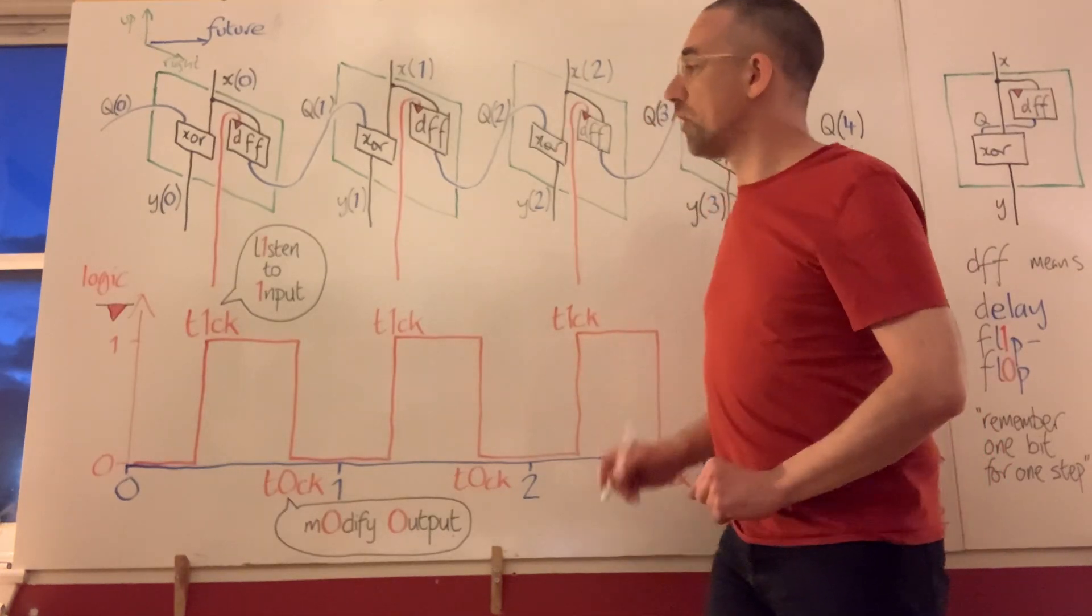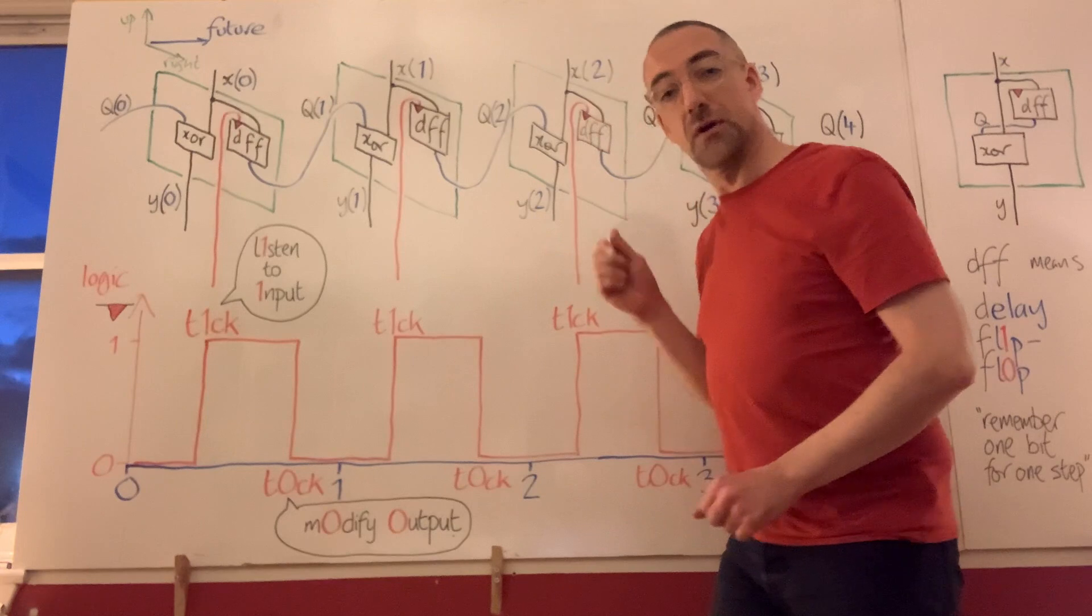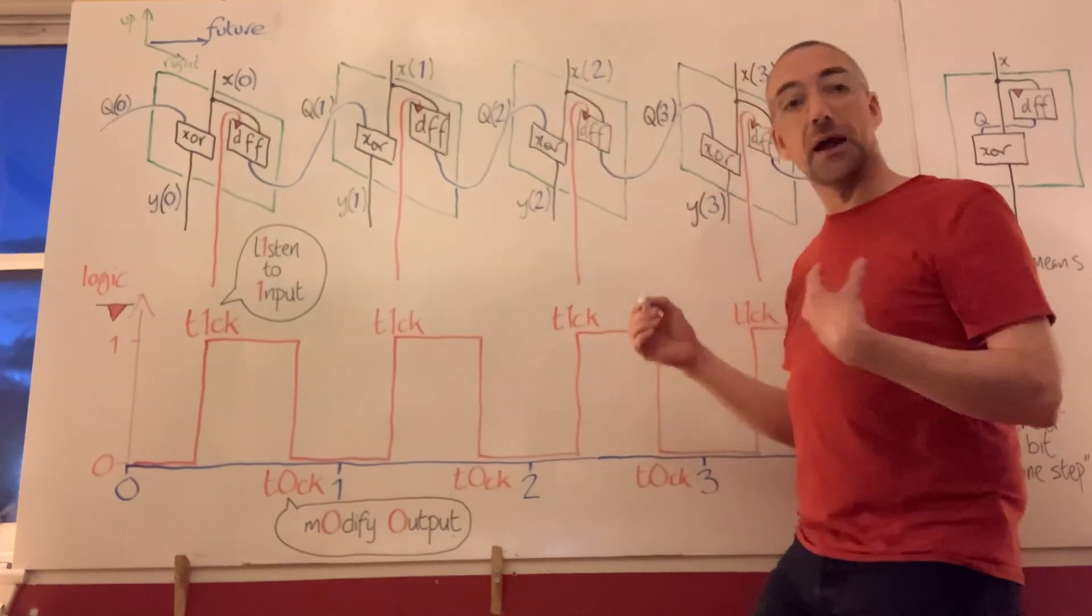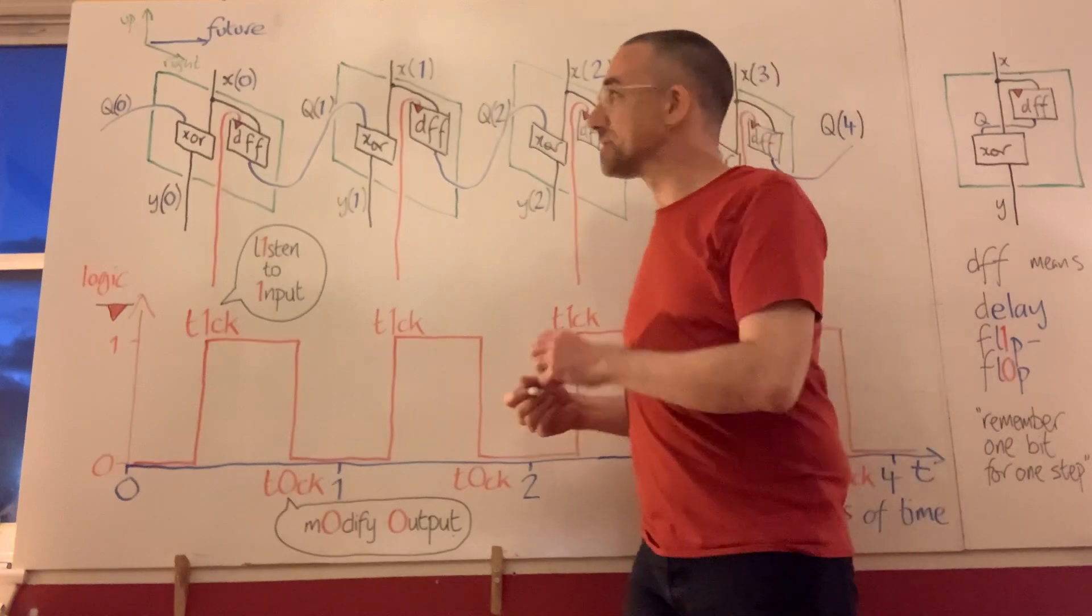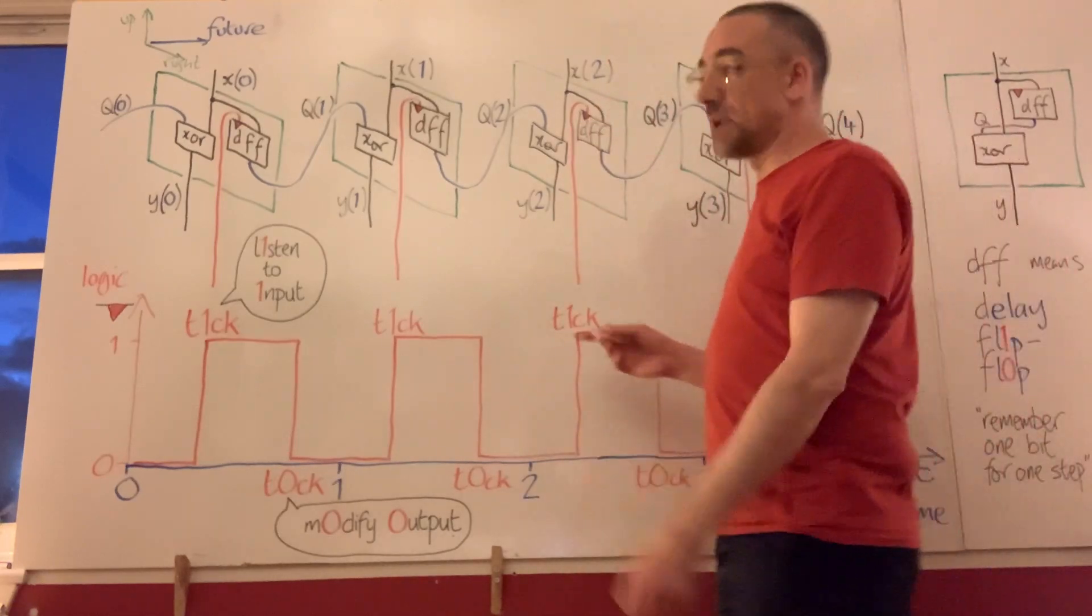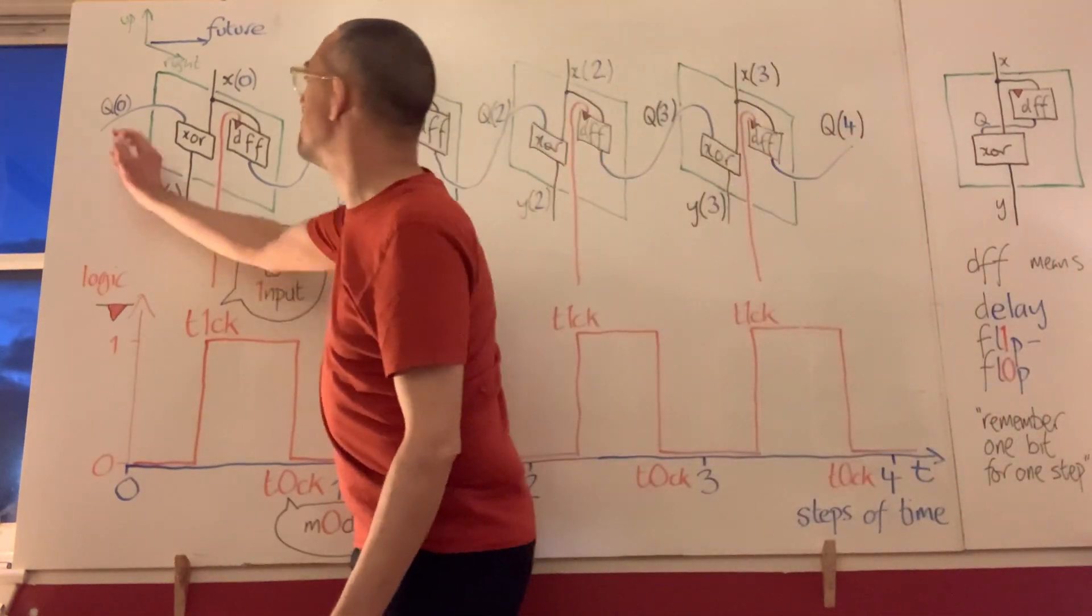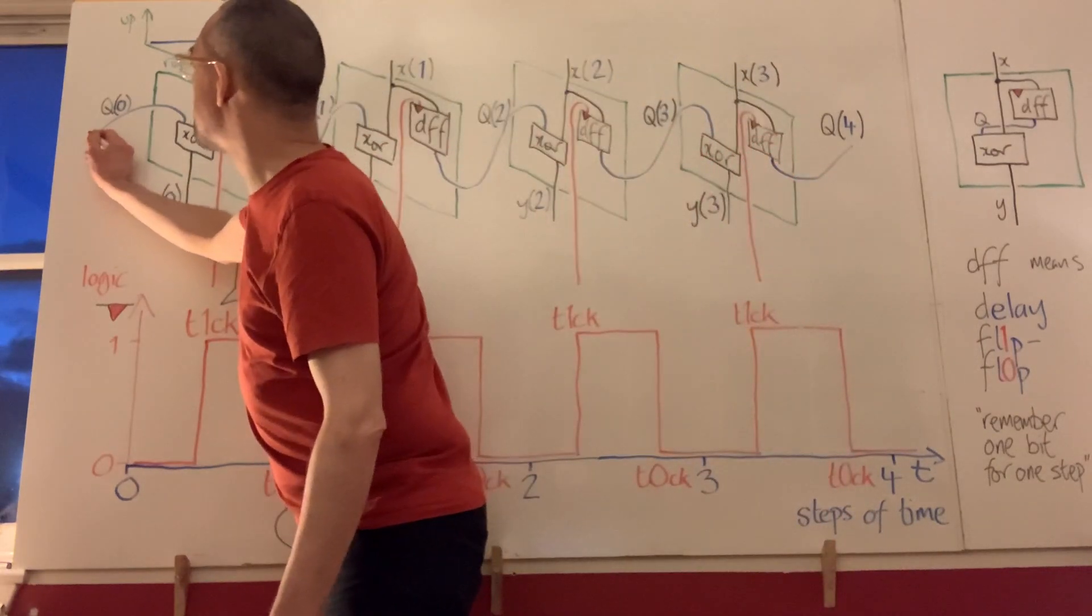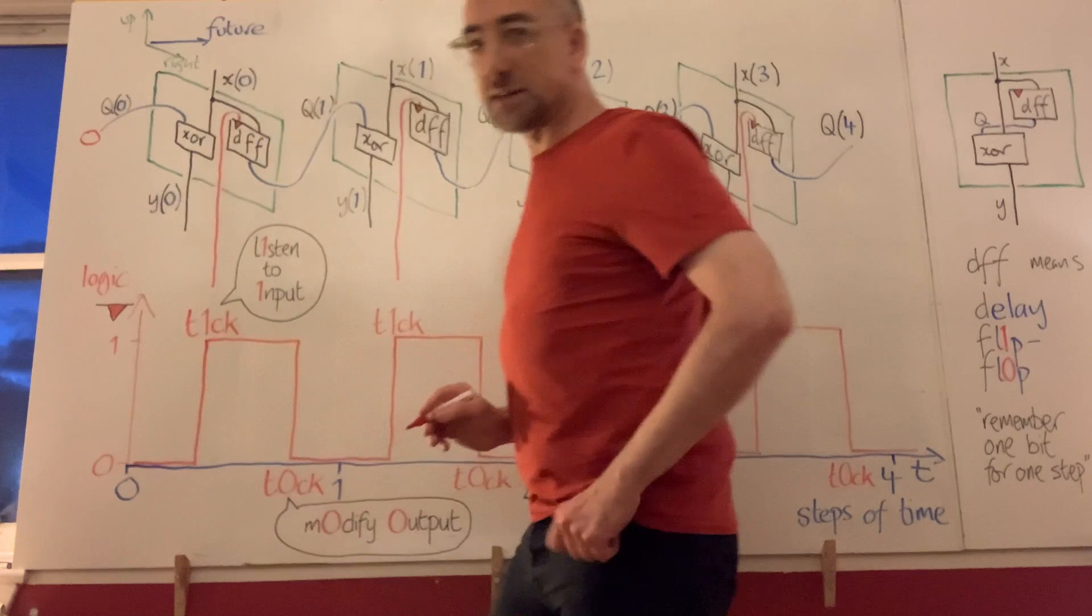So we'll see how the D flip-flop deals with those instructions by tracing what happens here. So let's suppose that we start with this blue wire having a 0 signal coming in and let's suppose that